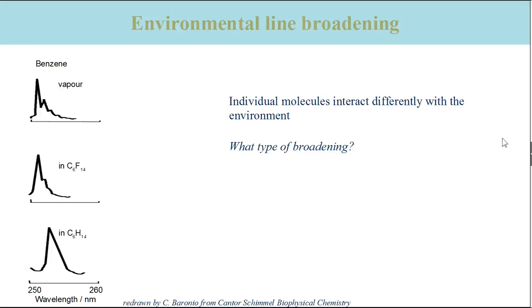This is the dominating broadening mechanism for the spectroscopy of biological molecules, because they always are in an environment that influences them in various ways. Now the usual question to you. Is environmental line broadening homogeneous or inhomogeneous? Stop the video to have time to think about this.